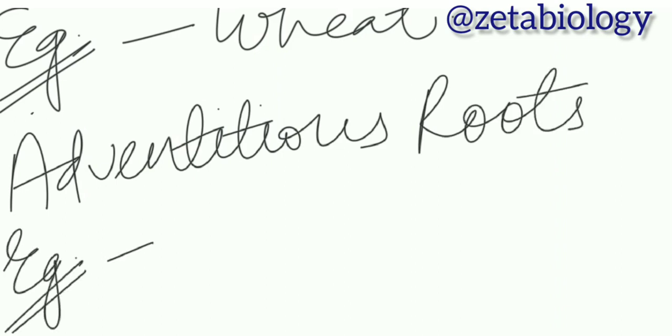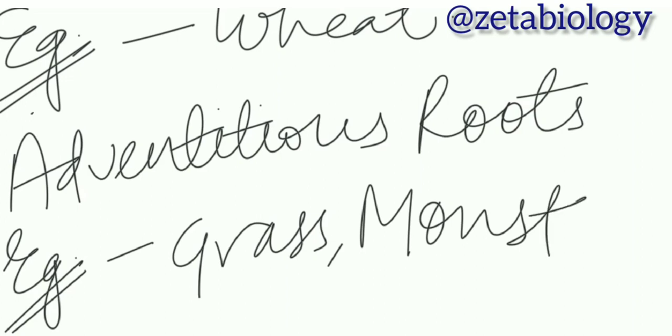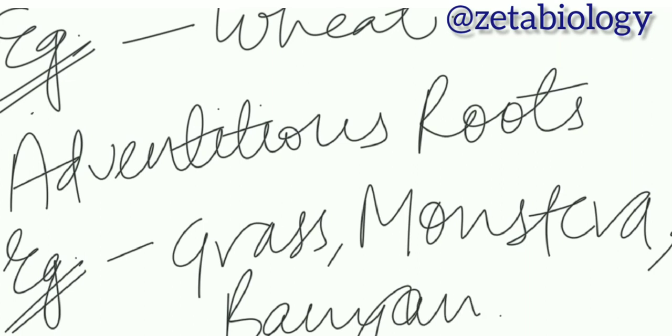Examples of adventitious roots include grass, monstera, and banyan tree. Banyan tree has a lot of external roots which arise from parts other than the radical.